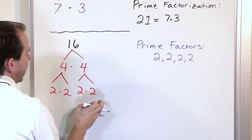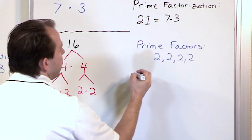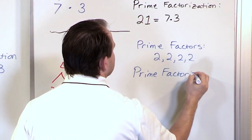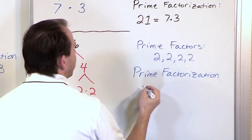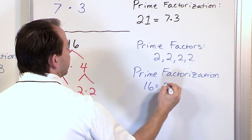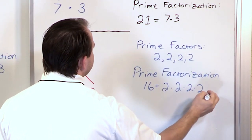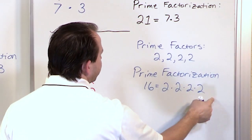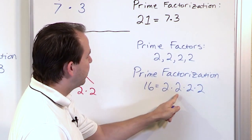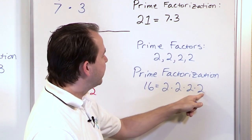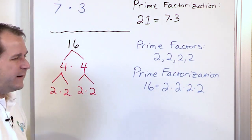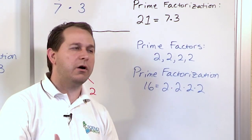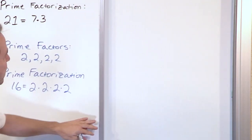You need to write down the multiplicity — write down as many 2's as you find at the bottom to list everything. The prime factorization is 16 = 2 × 2 × 2 × 2. When you multiply these things together it does give you 16: 2 times 2 is 4, 4 times 2 is 8, 8 times 2 is 16. So everything at the bottom of this tree — those numbers all multiply together to give you the number you're after.